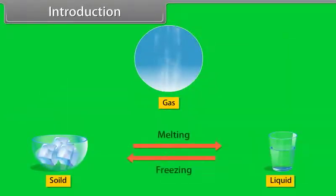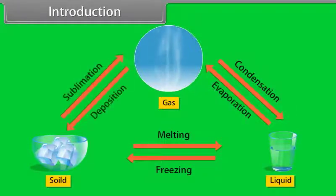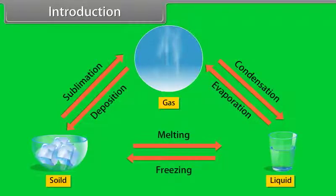Equilibria are solid and liquid, liquid and gas, solid and gas. In homogeneous equilibria, the reactants and the products are in the same phase, whereas in heterogeneous equilibria, the reactants and the products are in different phases.